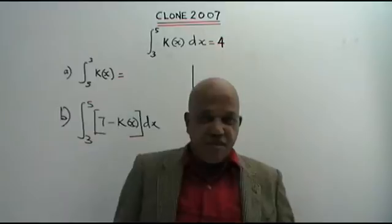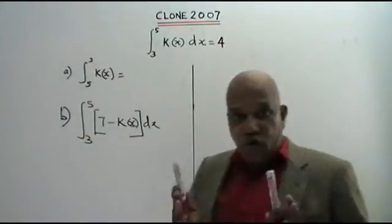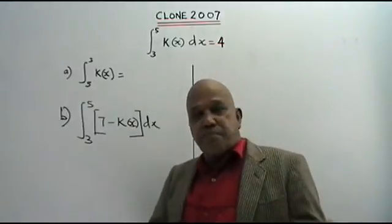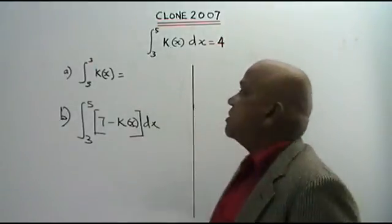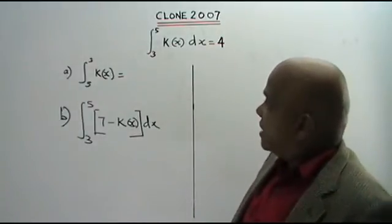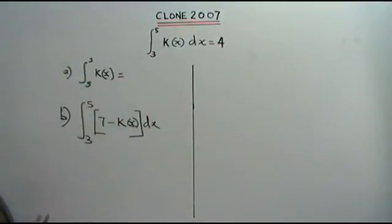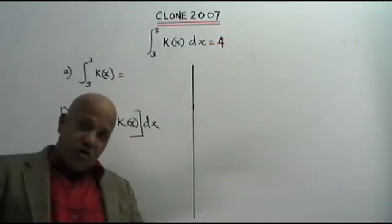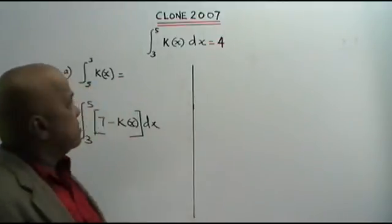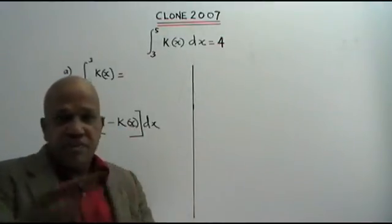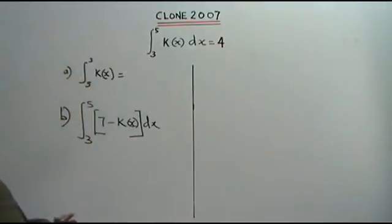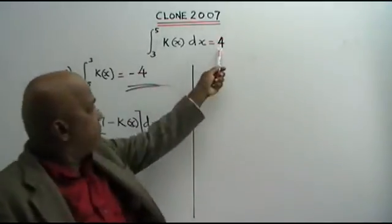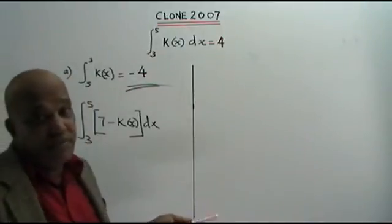Hi. Here I have for you a clone question based on the year 2007, Paper 1, SPM. Part A: you are asked to find the value of the integral of k(x) between 3 and 5. We are given that between 5 and 3 the value is 4. Therefore between 3 and 5 it is negative 4. Simple as that.